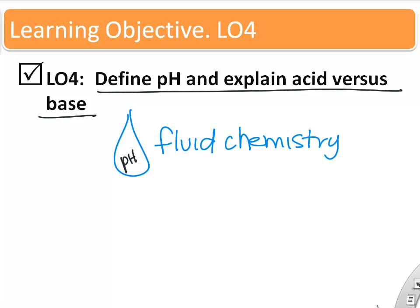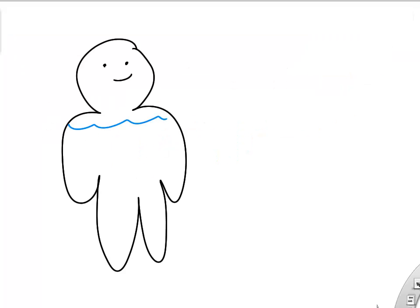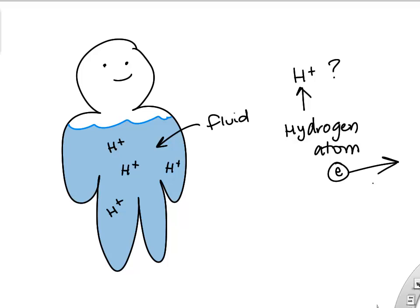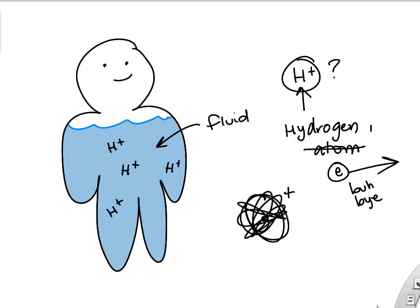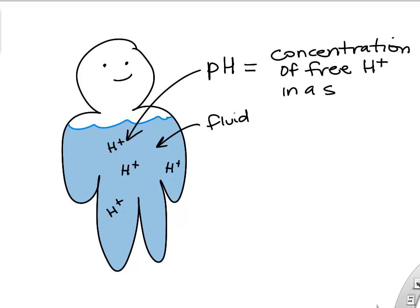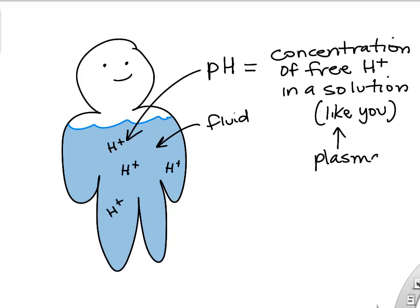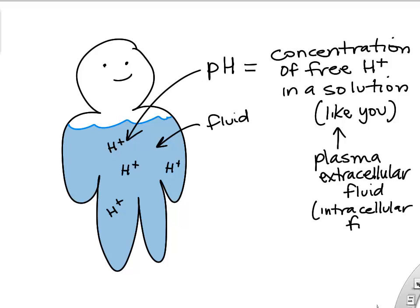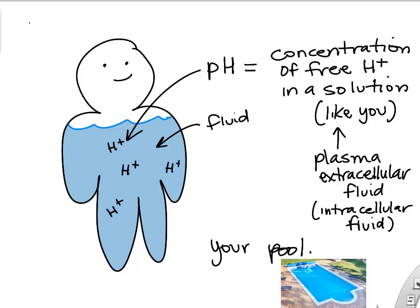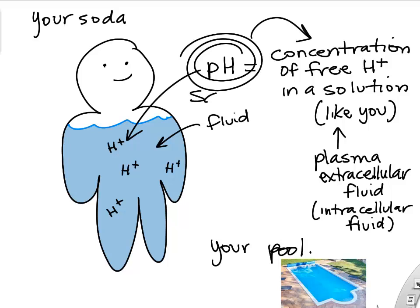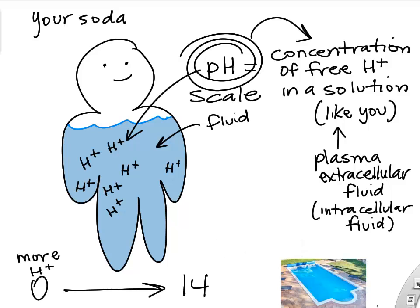Let's continue with fluid chemistry and talk about pH — or hydrogen ions that create the pH of a fluid. Since we're a lot of fluid inside and outside our cells, we need to care about how many hydrogen ions are floating around. These hydrogen ions are electrically charged positive because they lost their one tiny electron, so we call them an ion. The pH is defined by how many free hydrogen ions are floating around in the fluid.